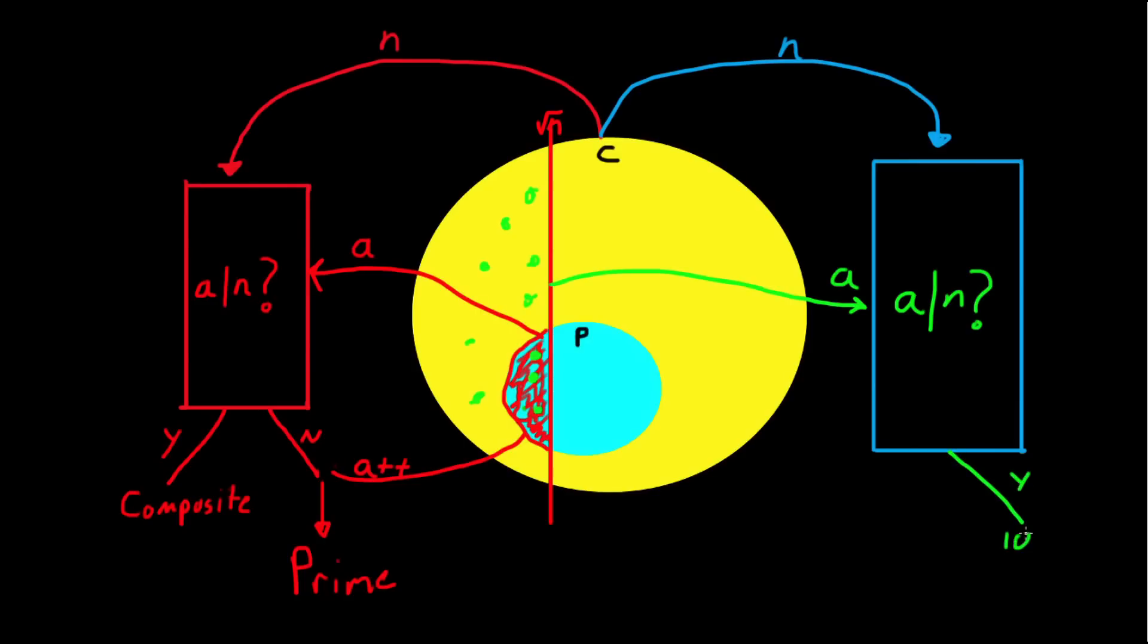Then we just check if a divides n. And as before, if a divides n, then we know for sure that n is composite. We found a witness. If not, then we haven't learned too much except that it could be prime. So to be safe, we could generate a few more random a's and keep testing.